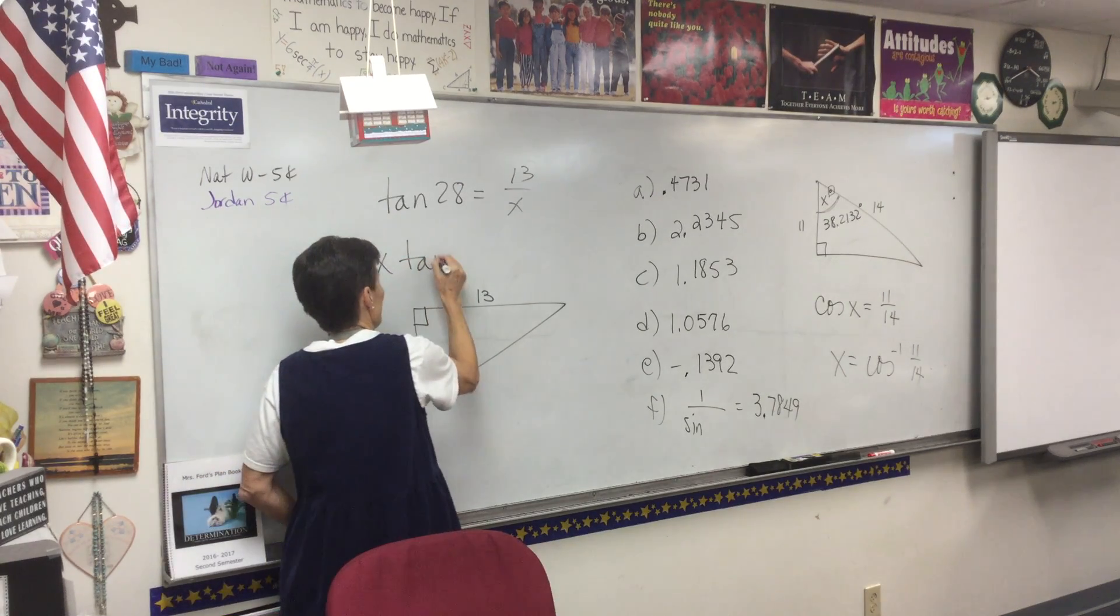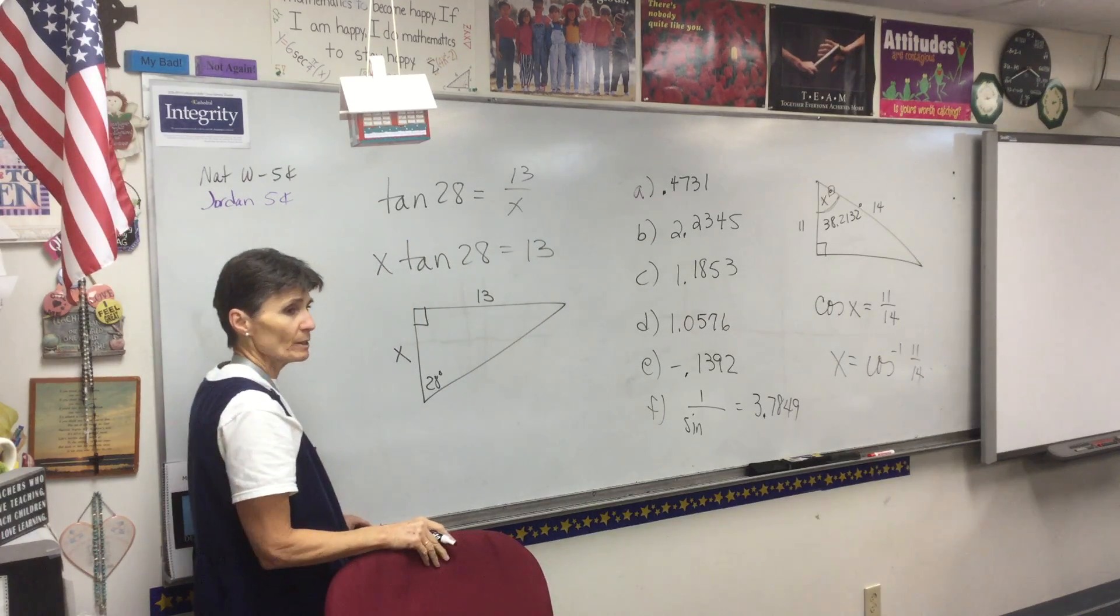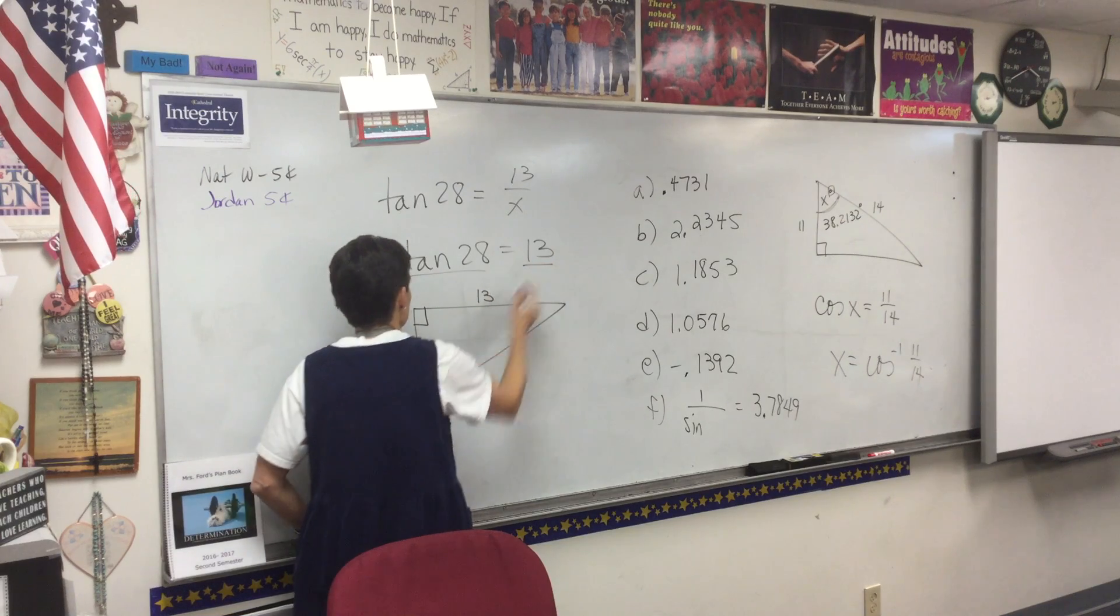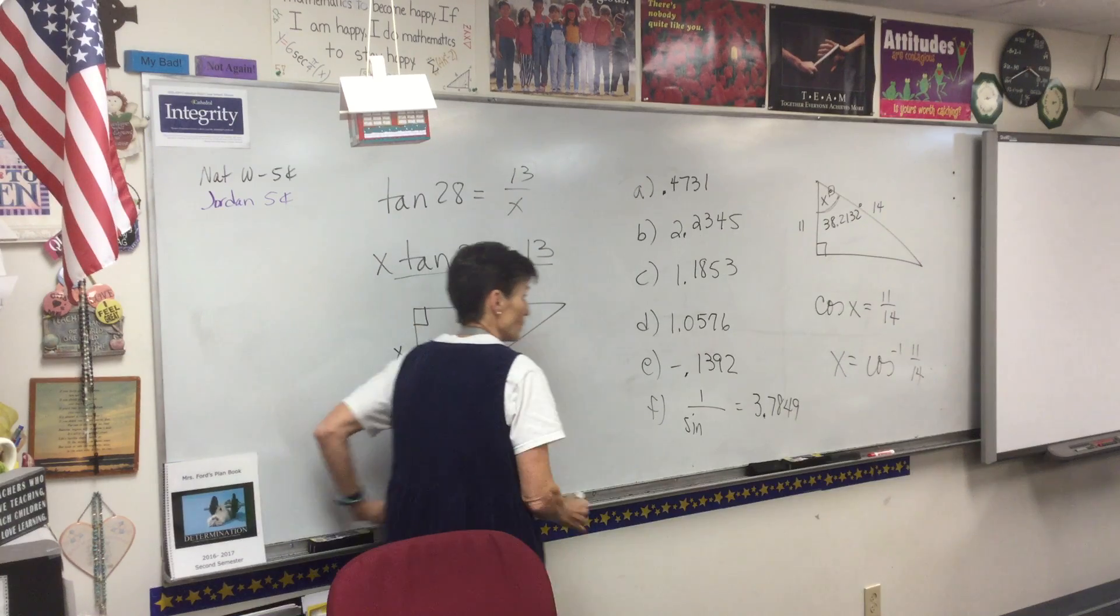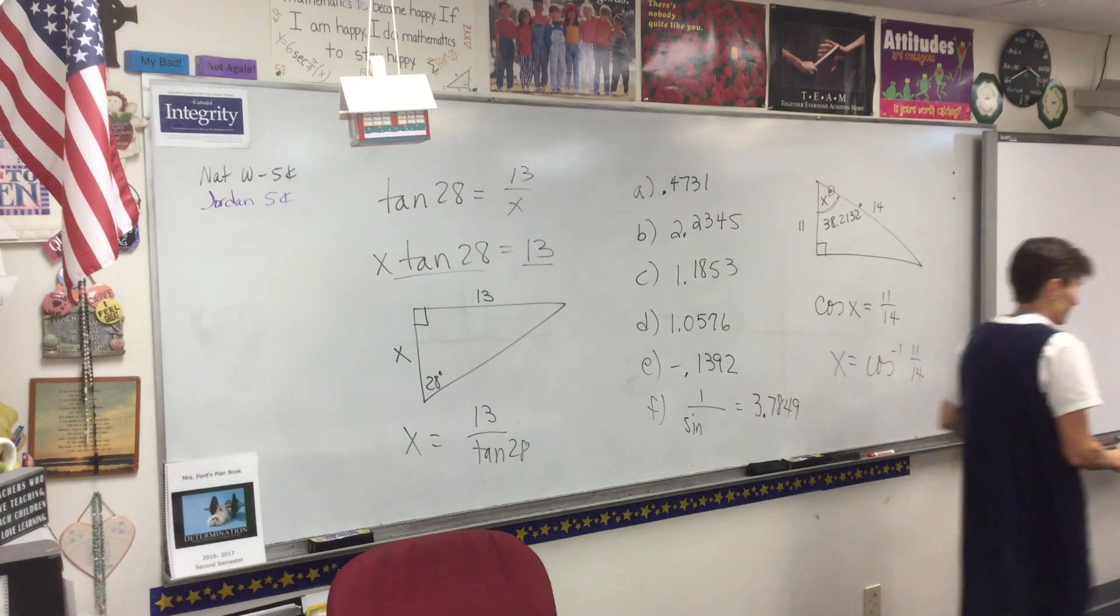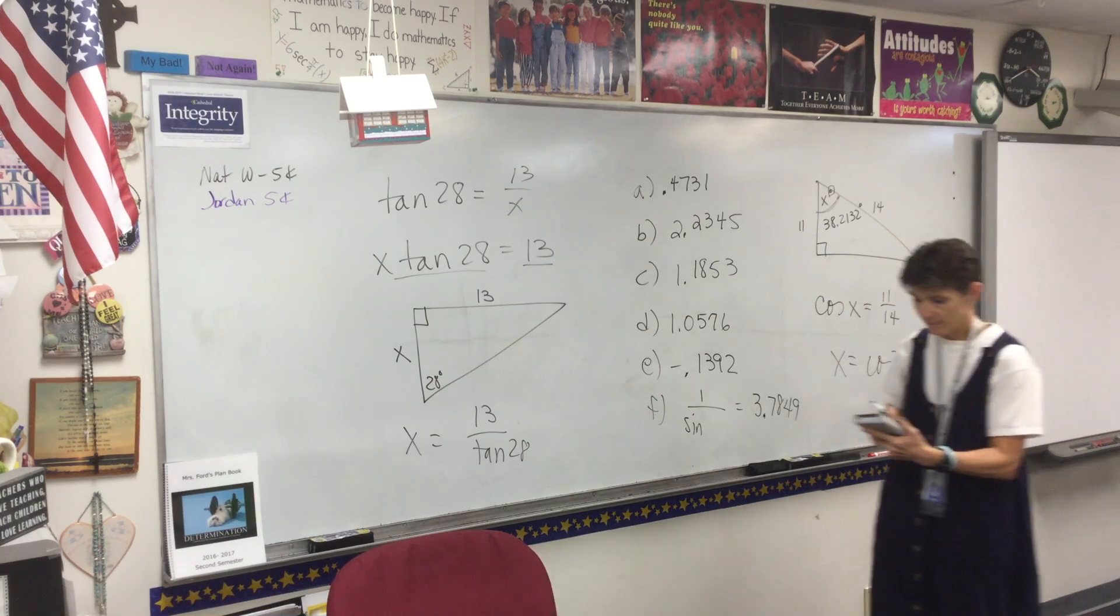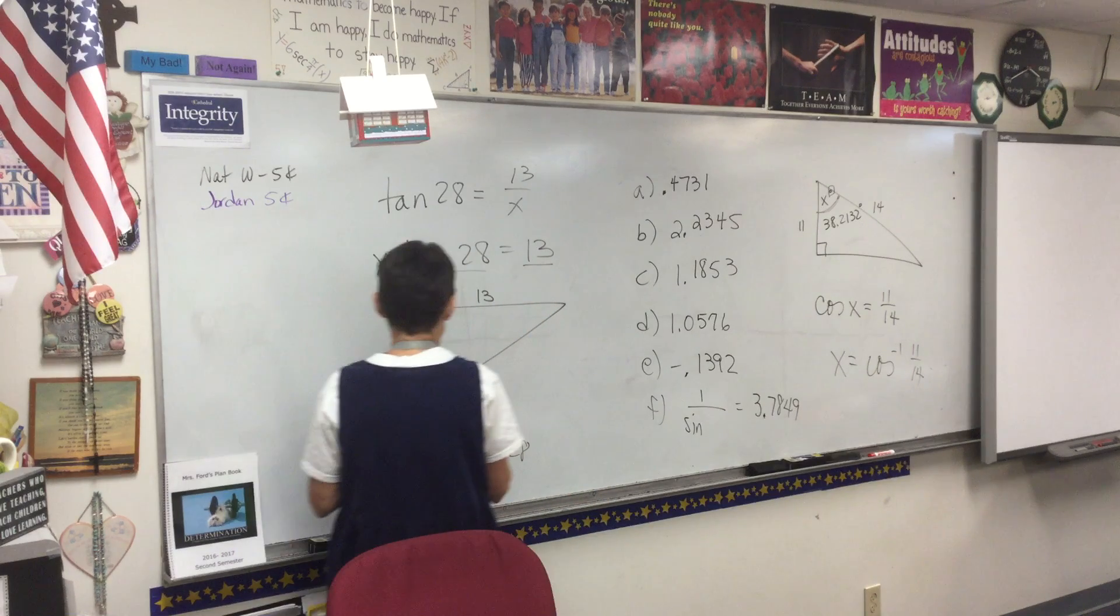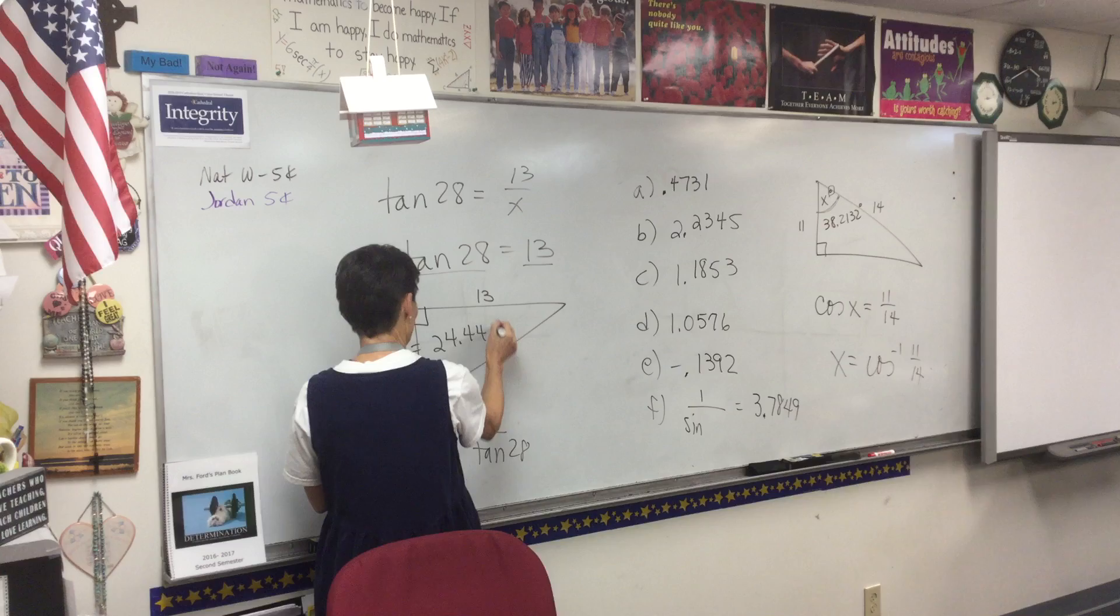Somebody's saying multiply by x on both sides, I love it. That's exactly right, that's how we do it. And then divide by tan 28. So x will equal 13 divided by tangent 28. So we'll type that in, 13 divided by tangent 28. And I got 24.4494.